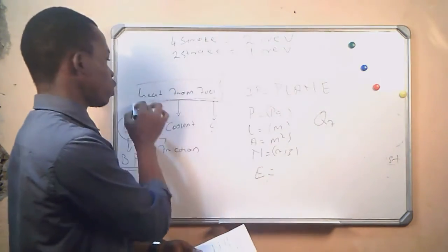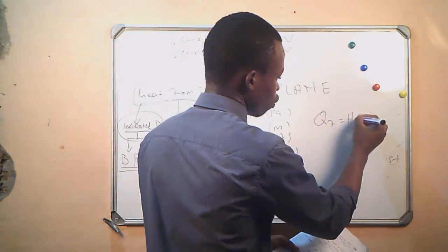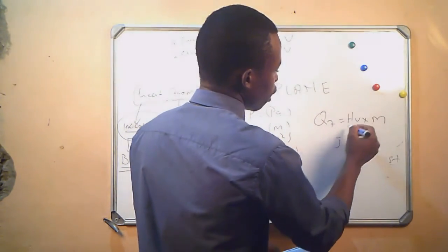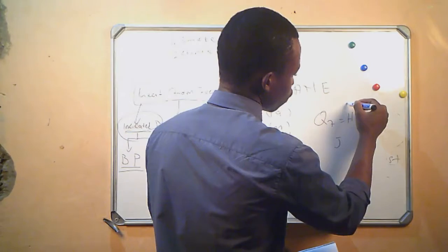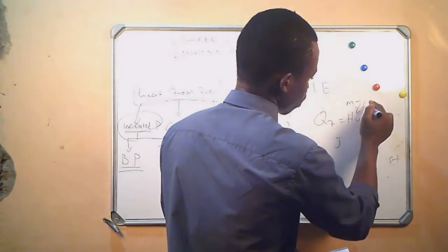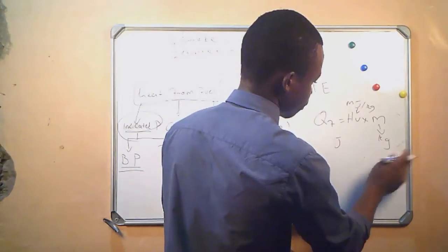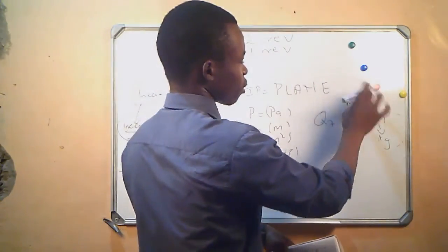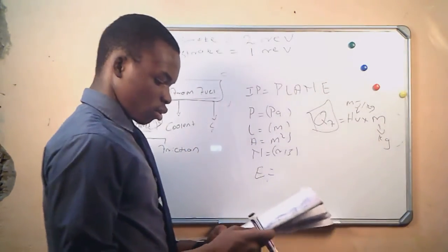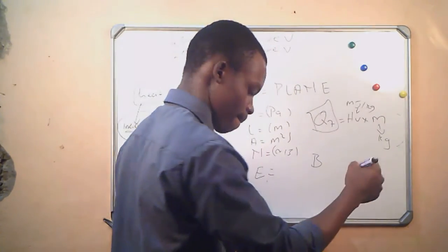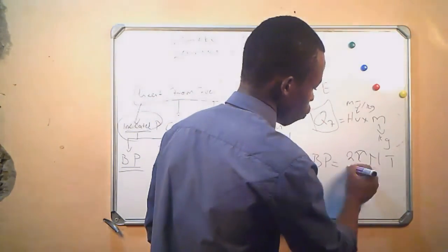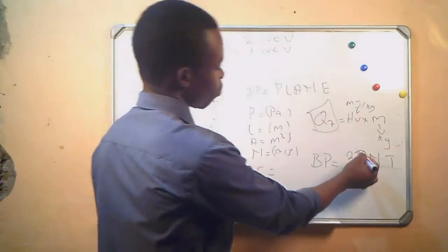The heat energy produced by the fuel is given by the heat value times the mass of the fuel, and this will be in joules. The heat value is given in megajoules per kg, and mass is in kg, so the result is in megajoules, kilojoules, or joules — but the SI unit for energy is joules. We also have brake power, which is given by 2π × T × N, where T is our torque and N is our rotational frequency.